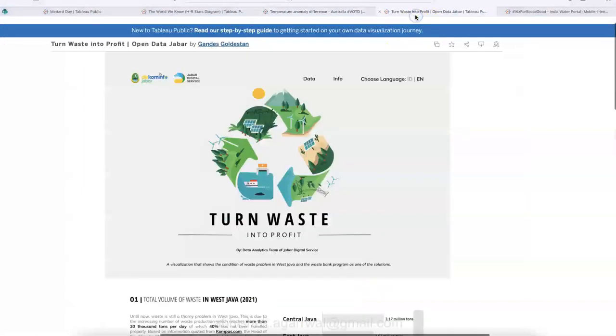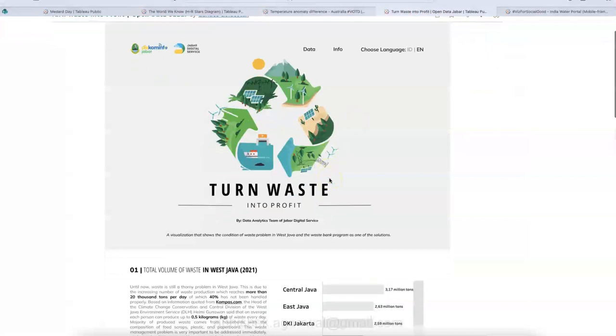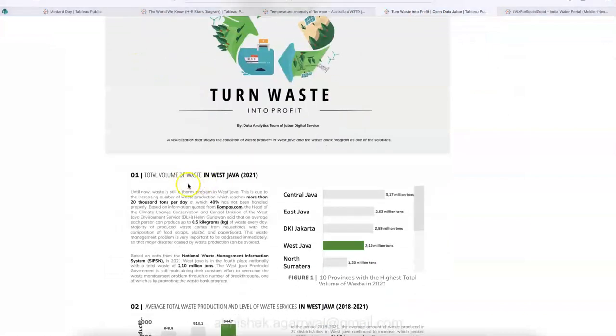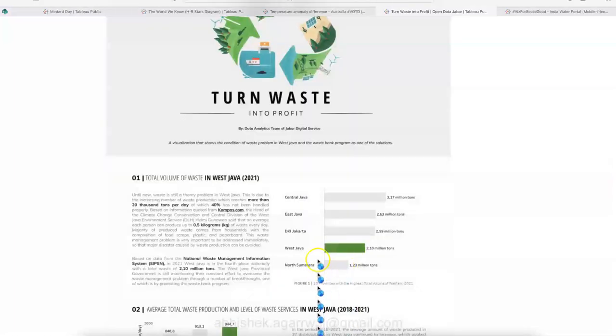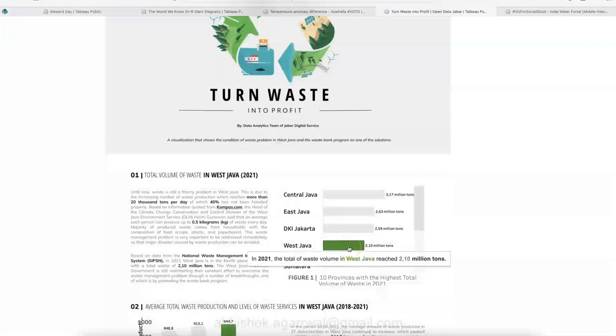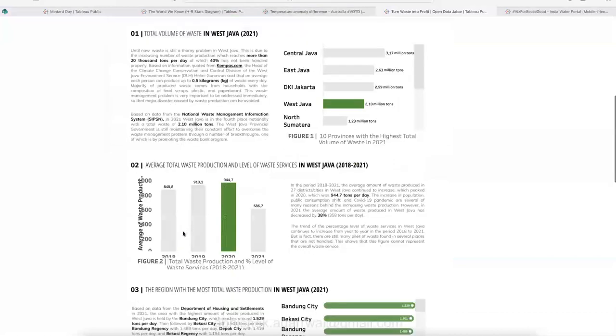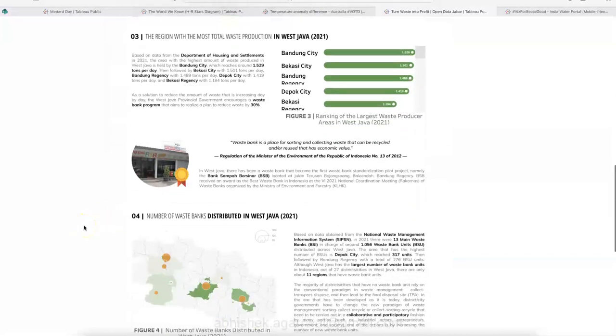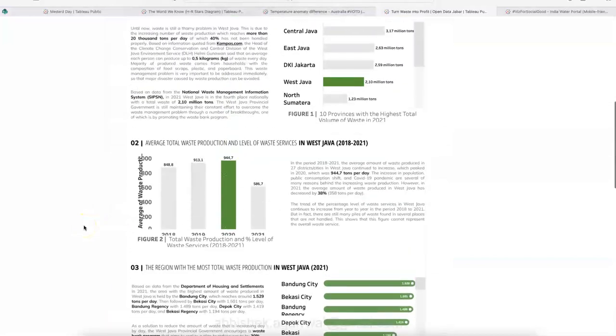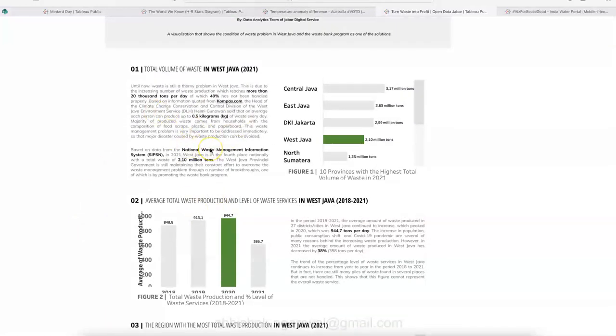Let's move on to the next visualization, which is turn waste into a profit. And this is where they are indicating the waste management or how you can turn the waste into a profit by studying what is happening in the West Java, which they have highlighted over here in green. So over here in West Java, you have 2.10 million tons of waste that was in 2021.